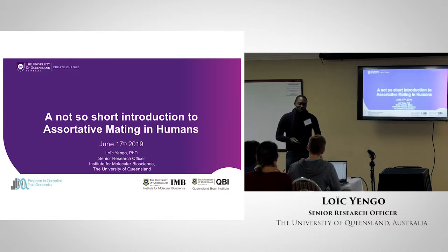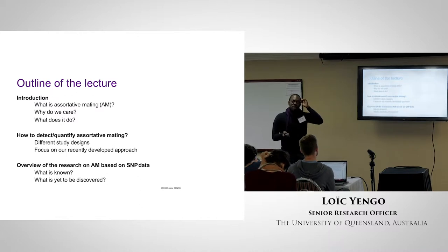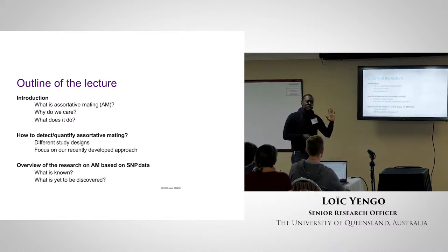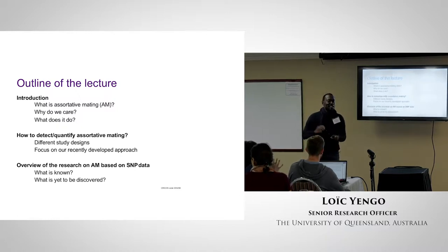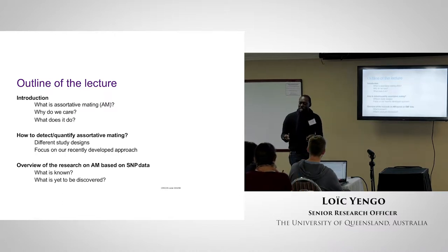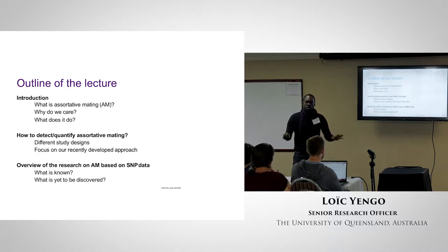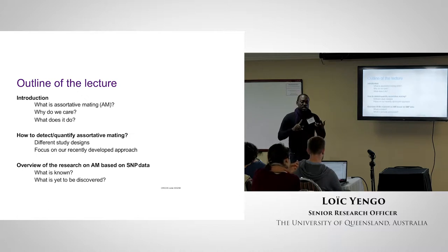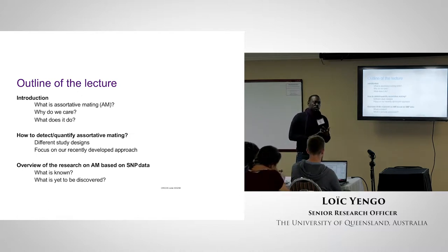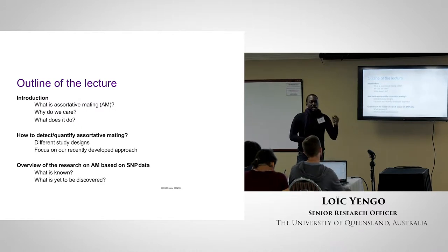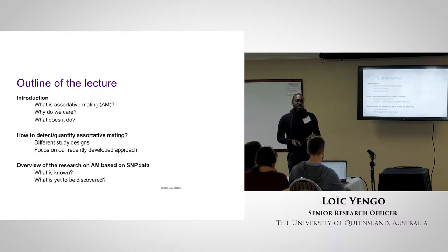Thanks to the organizers for shipping me here from Australia. I've chatted with some people and feel like everyone knows about assortative mating. So who knows about assortative mating? That plus the brilliant talk from James just made my life easier. So this is the outline of my lecture. I'll talk about the general idea of assortative mating, why we care about it, and strategies to detect and quantify it, with a particular focus on a method we published last year.